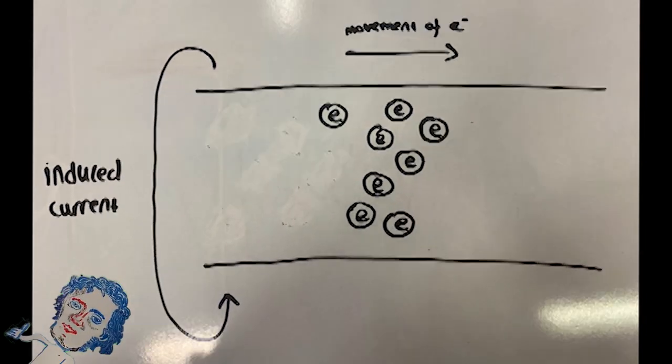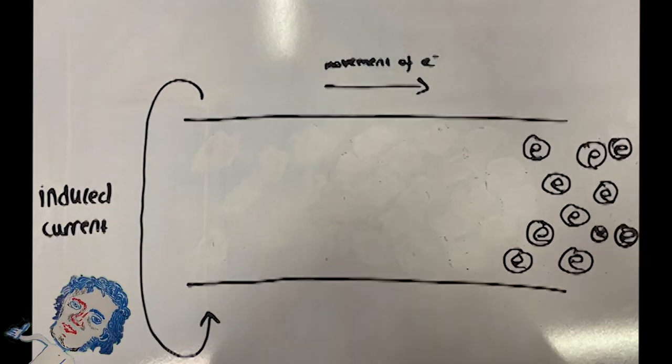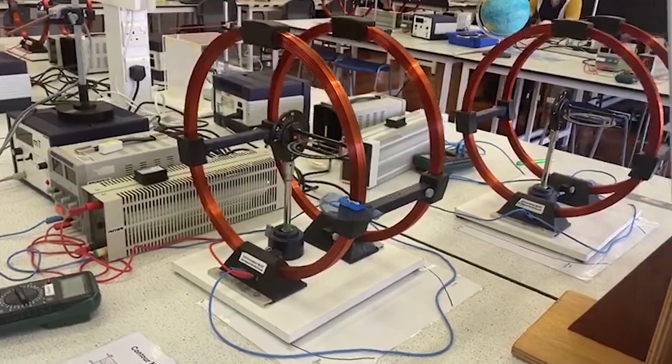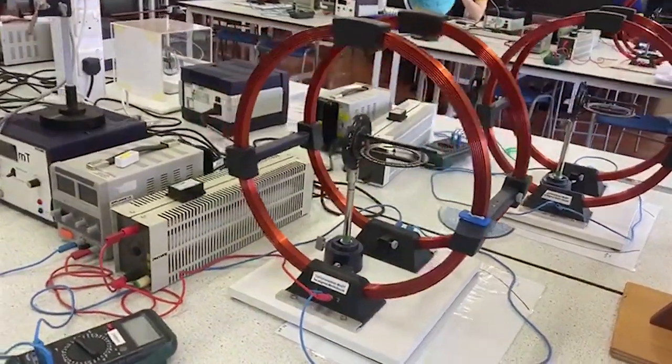Ampere came up with some equations we'll be using today. We'll be using Helmholtz coils which generate a uniform magnetic field between them. Helmholtz coils are loops of wires that are spaced a radius apart.